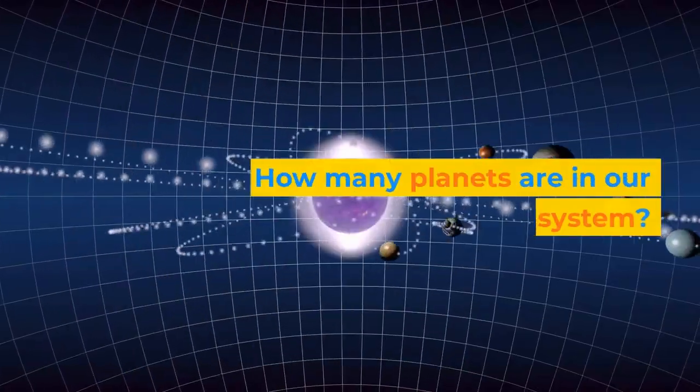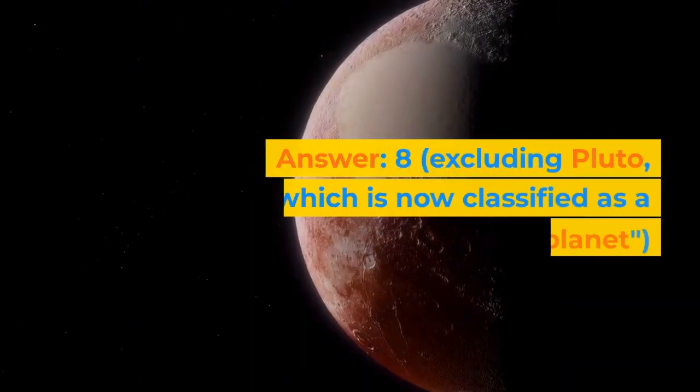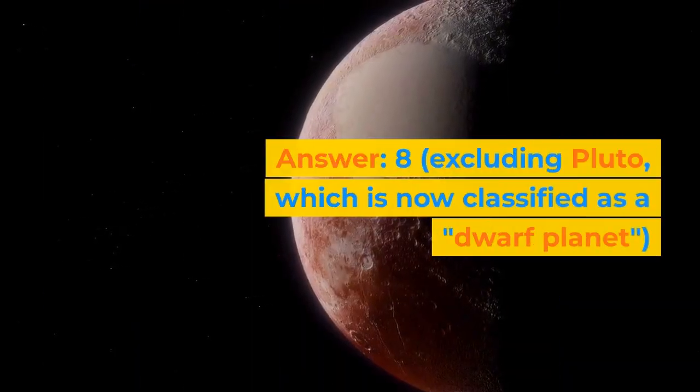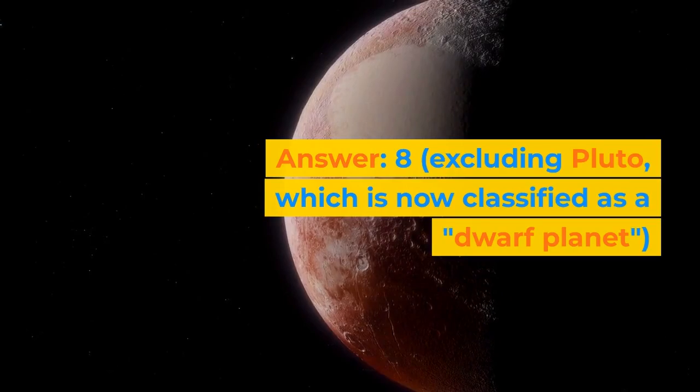How many planets are in our solar system? Answer: 8, excluding Pluto, which is now classified as a dwarf planet.